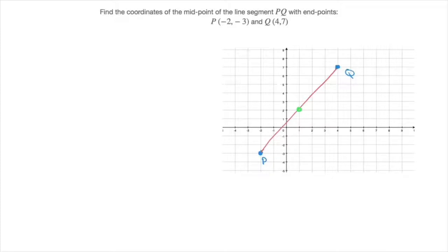Now, reminding ourselves of the formula for the midpoint. Remember, that was this formula right here. If we call the point x1, y1, point P, and the point x2, y2, point Q, then x1 would be negative 2, x2 would be 4, and y1 would be negative 3, and y2 would be 7.